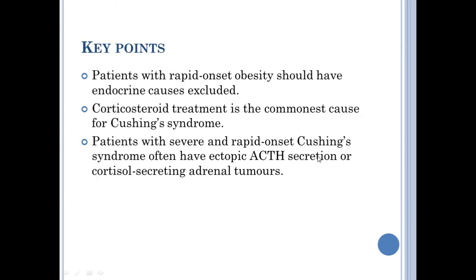Key points: patients with rapid-onset obesity should have endocrine causes excluded. In the differential diagnosis for obesity, it could be genetic, environmental such as excessive food intake, or alcohol-induced — which we ruled out here. The most important and serious cause would be hormonal, and we should exclude it at the beginning.